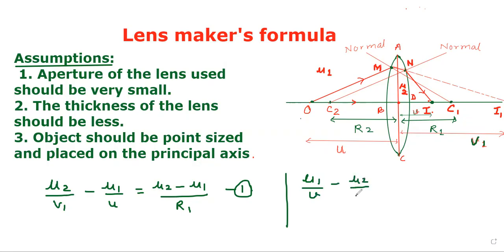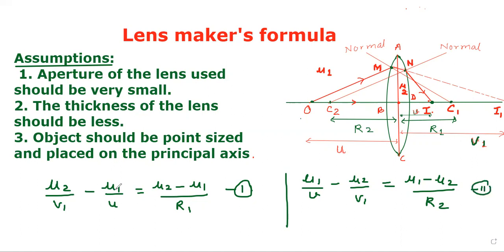This time refraction is taking place from a denser to a rarer medium. So we can write: mu1/v minus mu2/v1 equals (mu1 minus mu2)/R2. Here v is the position of the final image. This is equation number two.